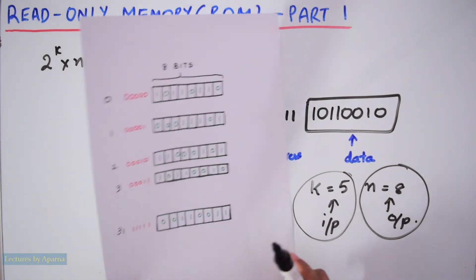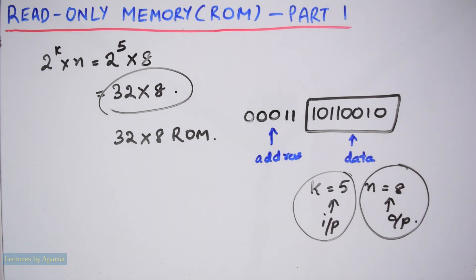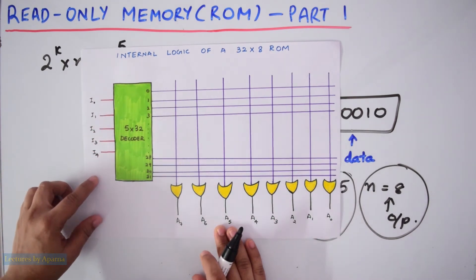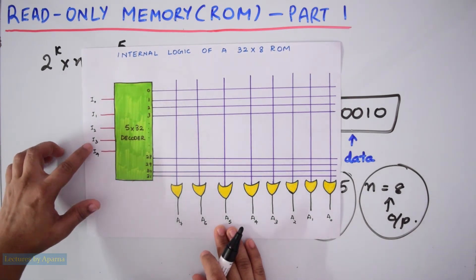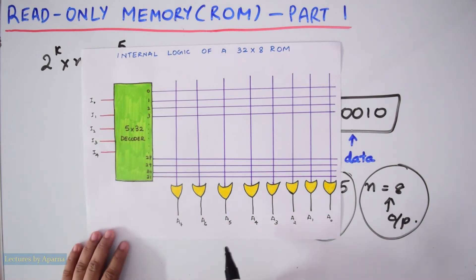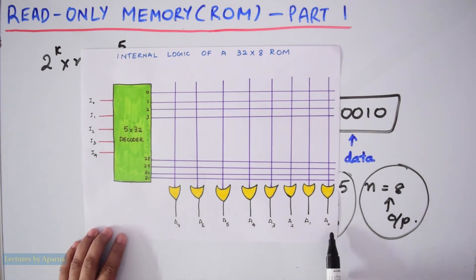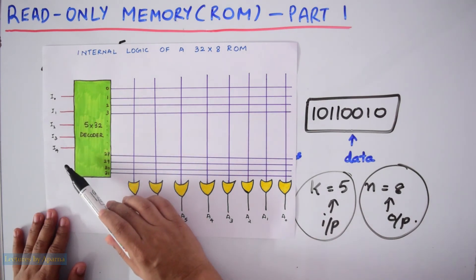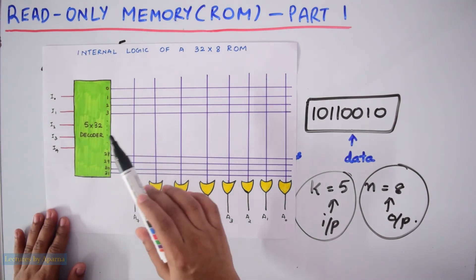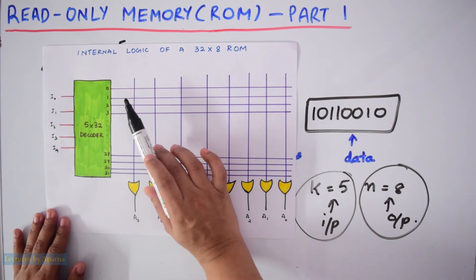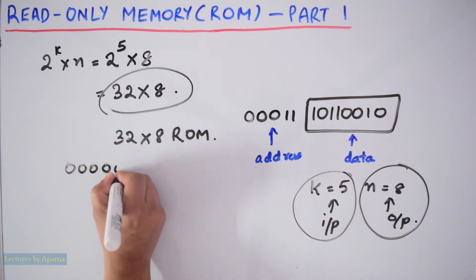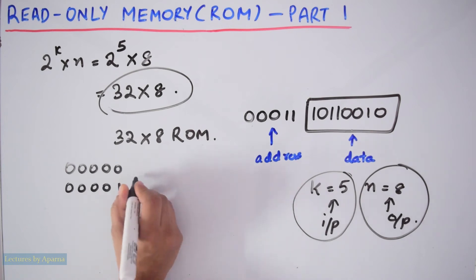The internal logic of a 32 by 8 ROM is as shown. There are 5 input address lines denoted by I0, I1, I2, I3, and I4. The 8 output data lines are denoted by A0, A1, A2, A3, A4, A5, A6, and A7. The input lines I0, I1, I2, I3, I4 are given to a decoder, and at the output of the decoder there will be binary numbers made using these 5 input lines — 00000, 00001, and so on like that.